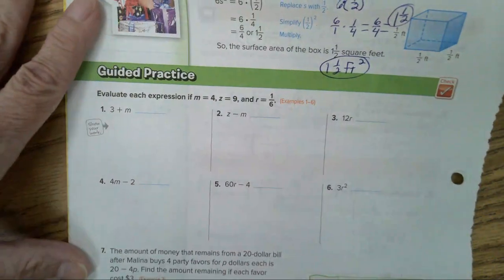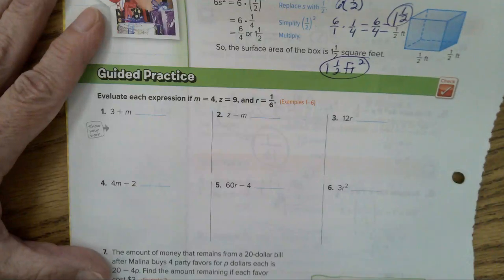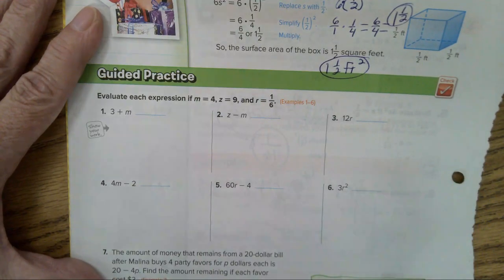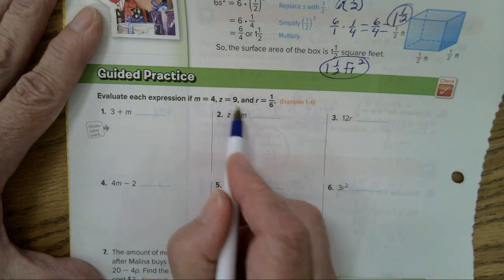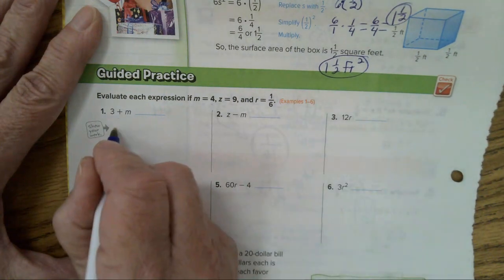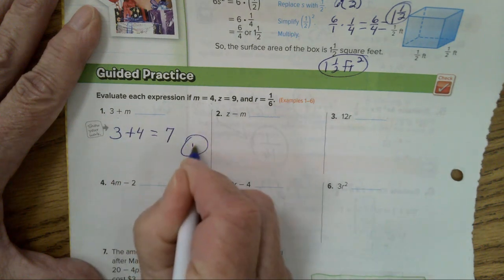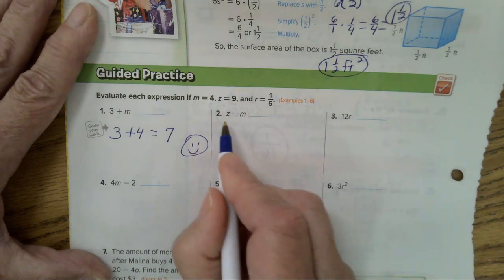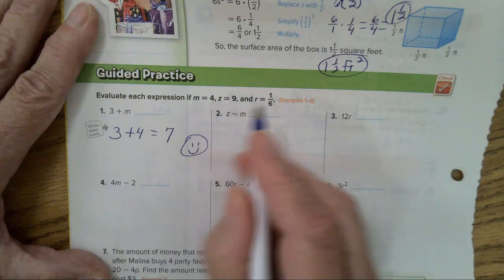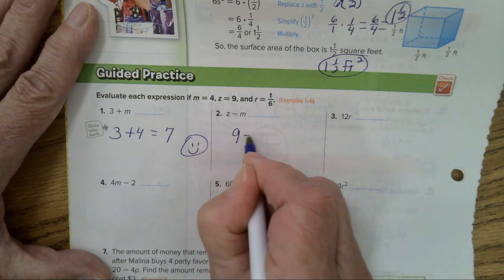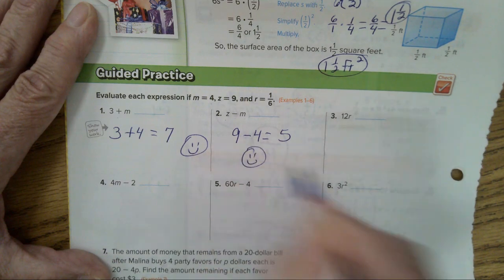Let's do the guided practice together, here. Number 1. 3 plus M. M is 4, Z is 9, R is 1 sixth. So, 3 plus 4 equals 7. Very easy. Let's do number 2. Z minus M. 9 minus 4. 9 minus 4 equals 5. Another easy problem.